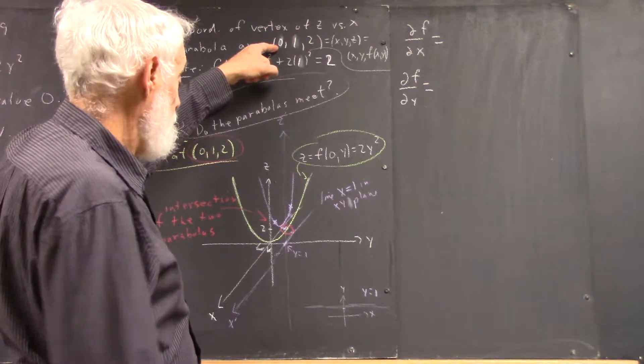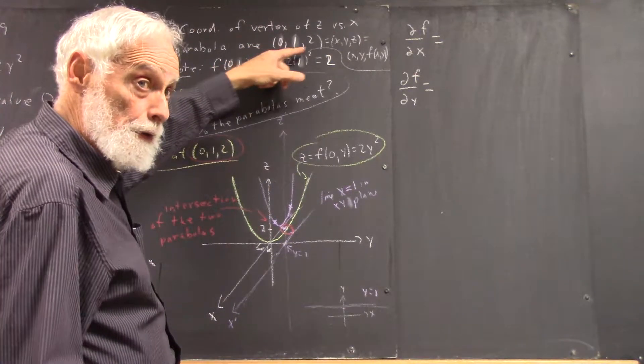Coordinates are: X is 0, Y is 1, Z is 2.